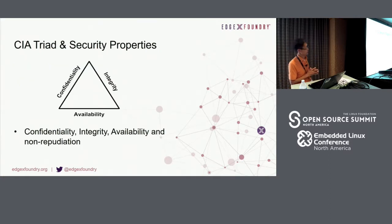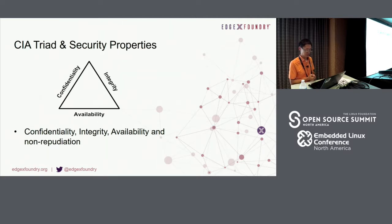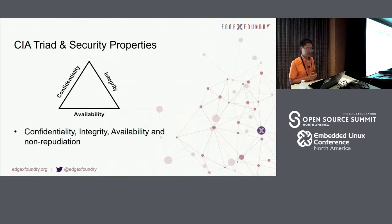These triangles represent confidentiality, integrity, and availability — known as CIA — the top three fundamental security properties in a threat model. Confidentiality ensures information can only be accessed by authorized individuals. Integrity ensures that information is authentic and reliable. Availability means the resource is accessible to meet a business need. In threat modeling, there's one more thing to consider: non-repudiation, which means someone cannot deny something they have done. A good example is a digital signature, which can only be used by the individual who sent it.